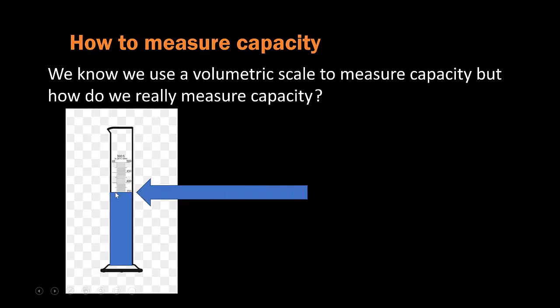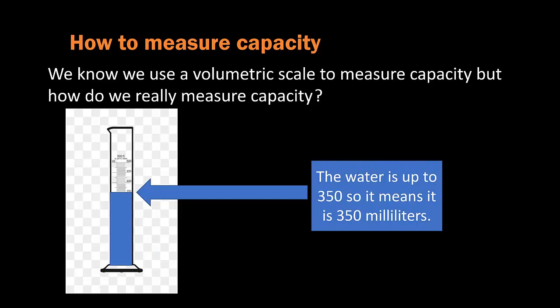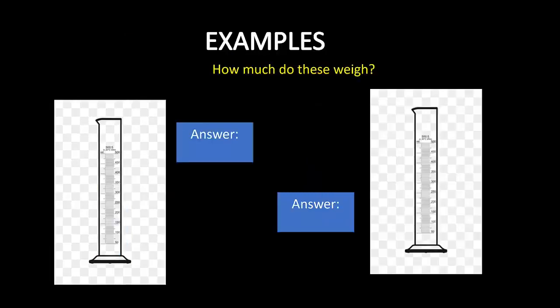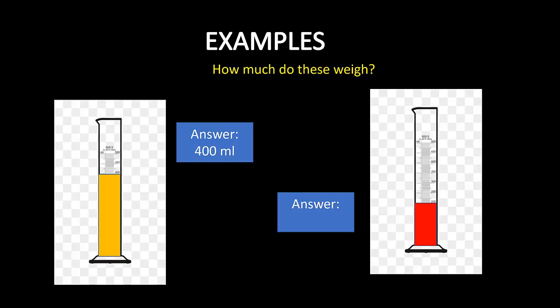If you look closely, the water is up at 350, so that means the water is 350 milliliters. Now let's see some examples. Here's our volumetric cylinder and the orange juice is up to 400, so our answer is 400 milliliters. The apple juice is up to 200, so our answer is 200 milliliters.